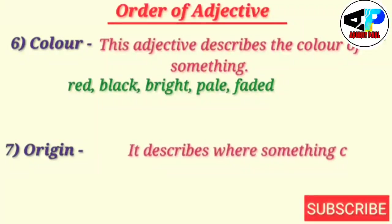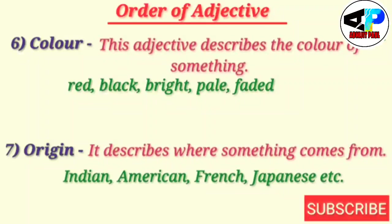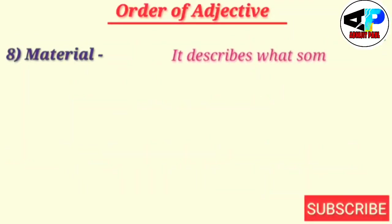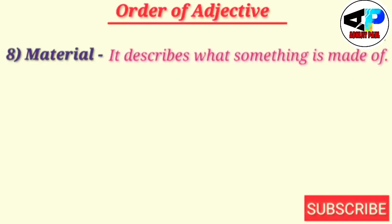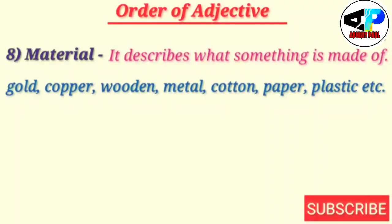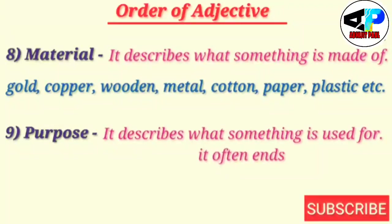The next sequential order of adjective will be origin. Origin means it describes where something comes from — for example, Indian, American, French, Japanese, etc. Next order will be material. Material describes what something is made of — like wooden, gold, copper, metal, cotton, paper, plastic, etc. Our next order will be purpose, which describes what something is used for, and it often ends with '-ing'.